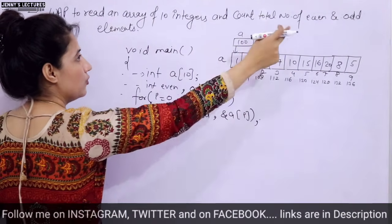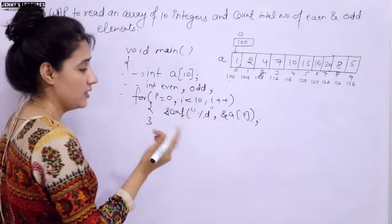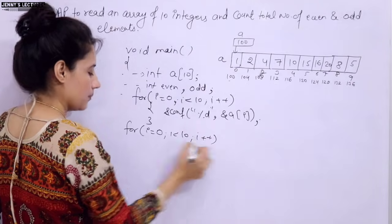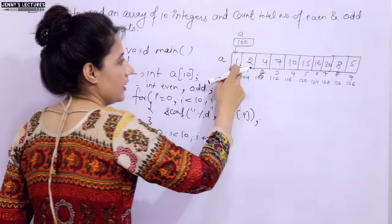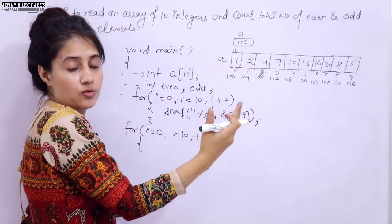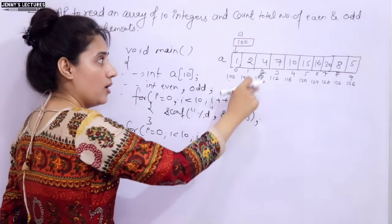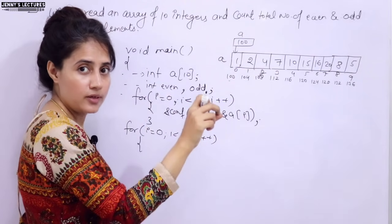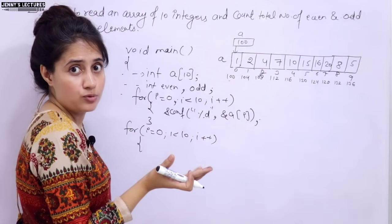Now, how to count odd and even numbers? For counting, we need to access the elements using one more for loop, from 0 to 10 with i++. We access each element: if it is odd, do odd++; if it is even, do even++. The logic is: if the number divided by 2 has remainder 0, it is even; otherwise it is odd. So we use an if-else with the modulo operator.